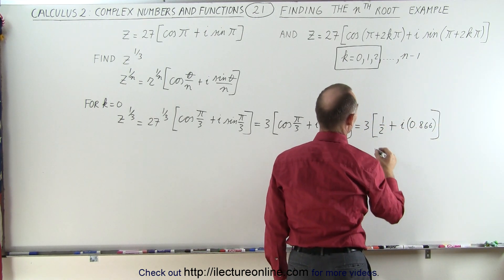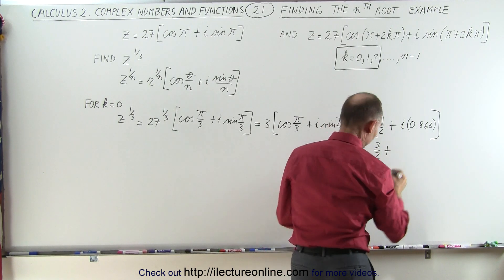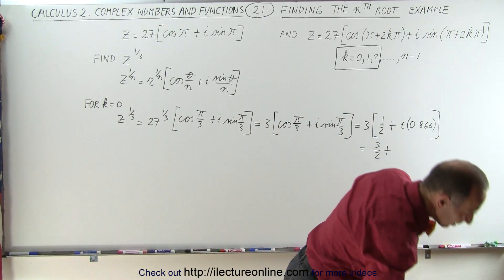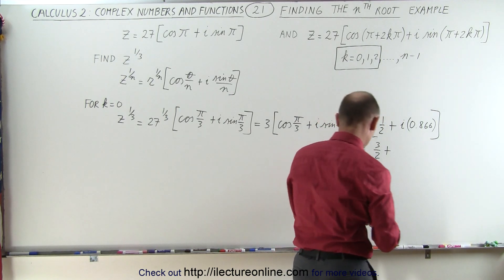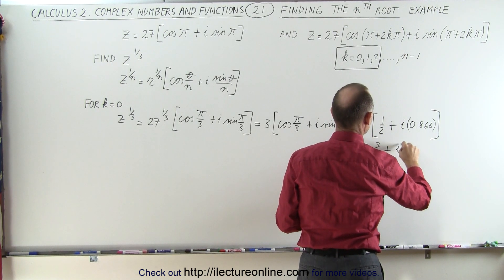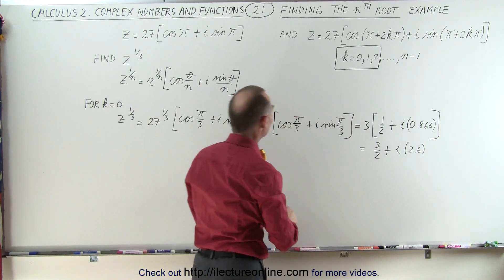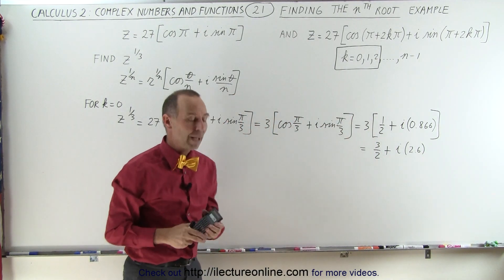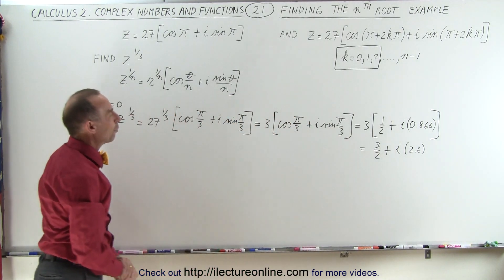And of course we can then multiply this times 3, and this can then be written as 3/2 plus, and 0.866 times 3 is 2 point, we'll call it 2.6, that's close enough, plus i times 2.6. So we can leave it in this form of course, or we can actually work it out and place it back into the z equals a plus bi form.